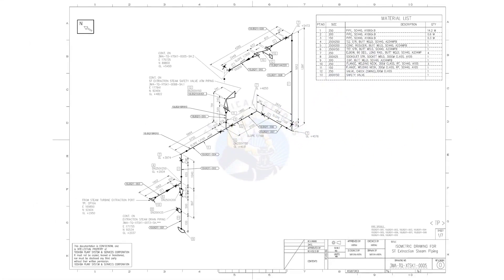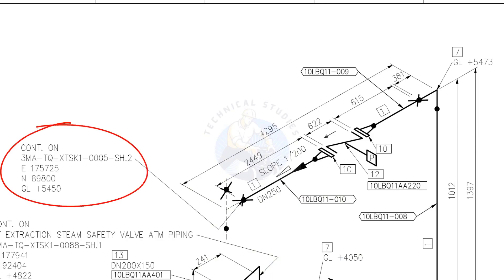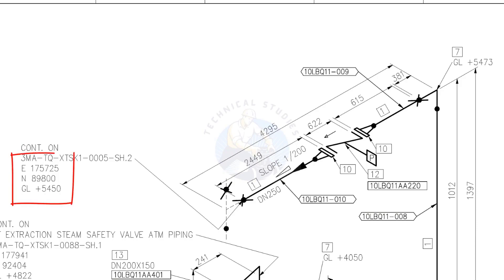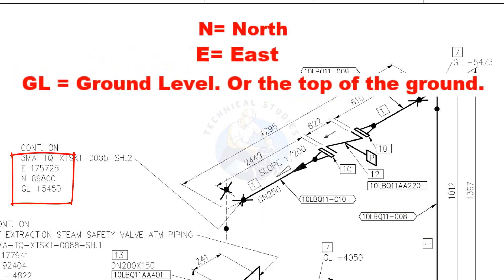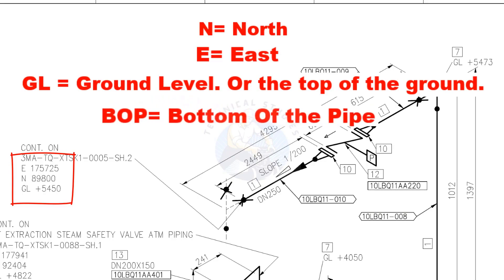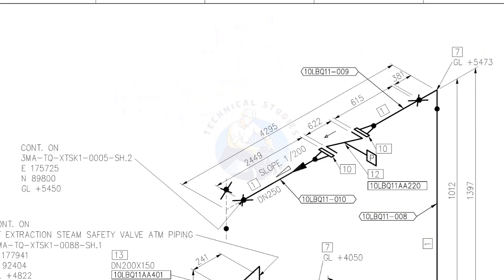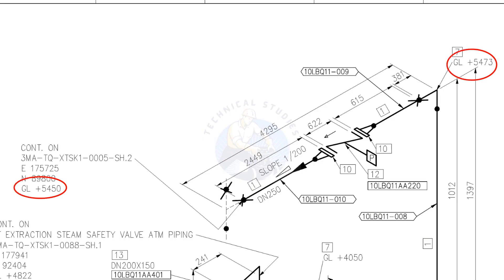Let us go to the drawing. This drawing is the continuation of the previous drawing. See the coordinates — N means north, E means east, and GL means ground level, which is the top of the ground. GL and BOP are the same here; BOP means bottom of pipe. D250 means the nominal diameter of the pipe is 250, which we already know is equal to 10 inch NB. Slope 1 is to 200 means the pipe is sloped 1 millimeter in every 200 millimeters. Consider a pipe with 1000 millimeters length — it would have a 5 millimeters slope. Compare these two levels and write down the slope in the comment box.